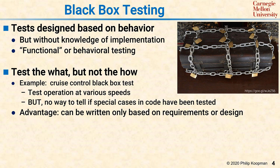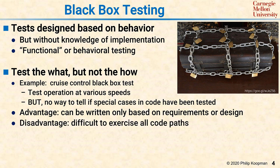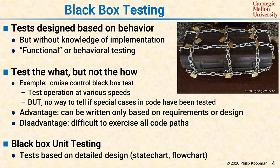The advantage to a black box test is it can be written only based on the requirements or design — you don't need to know what's inside the code. Another advantage is that sometimes looking at the code makes you think a certain way, and black box testing is not subject to that particular bias. The disadvantage is that it can be difficult to exercise all the code paths because you don't really know what's going on inside. At the unit testing level, black box testing looks like basing tests on the detailed design — looking at the flow chart or state chart and confirming the software behaves the way the design says it should.